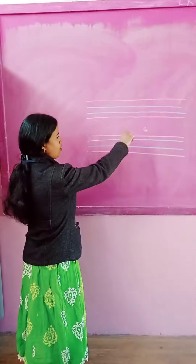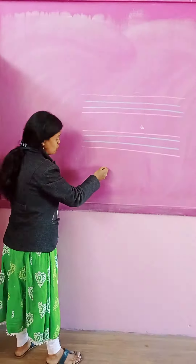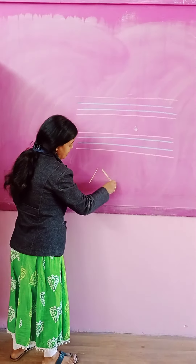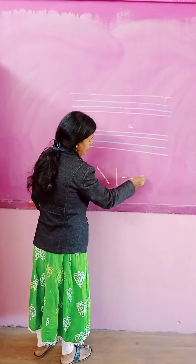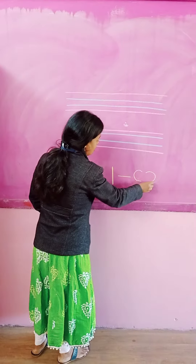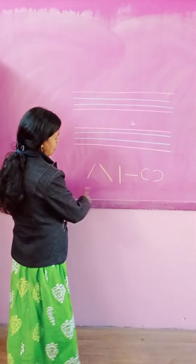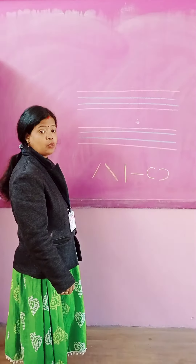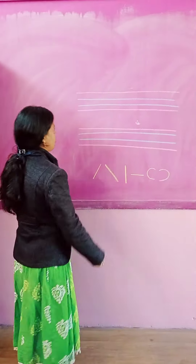Now, first what we will do — you know there are different lines. This is slanting line, this is straight line, this is sleeping line, and this is curve, okay? With the help of these, today we are going to write cursive letters.